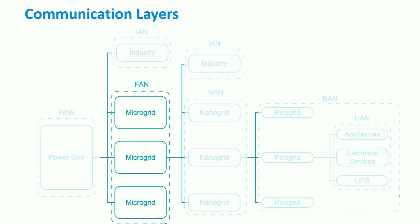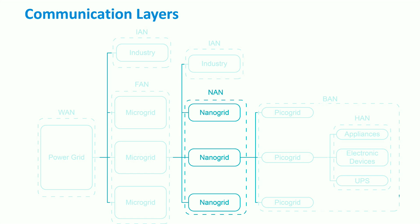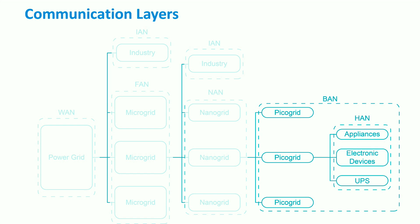The field area network acts as a connection point between the customer and the secondary substation. The near area network supports the home energy management system and consists of a cluster of small body area networks. Finally, the local area network operates on the smallest grids. The body area networks, industrial area networks, and home area networks are all local area networks.